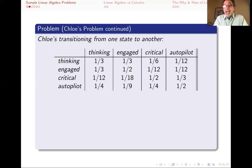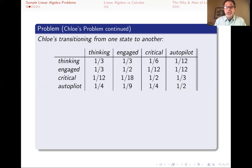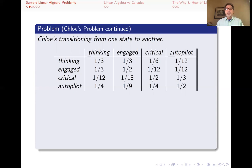Each one of these columns adds up to one, because if you're at some state — for example, critical of yourself — then the next hour you're going to be doing something. So those numbers in the third column — one-sixth, one-twelfth, one-half, and one-fourth — have to add up to one. For example, if Chloe is engaged with some external task in one hour, then one-eighteenth of the time she will be critical of herself the next hour.